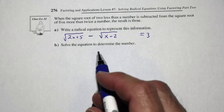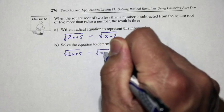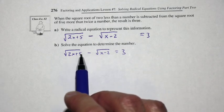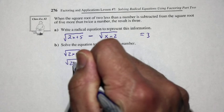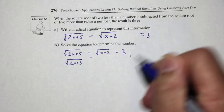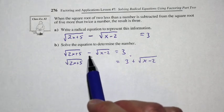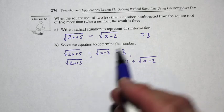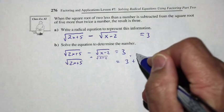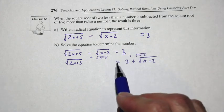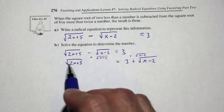Let's solve that equation. We have square root of 2x plus 5 minus the square root of x minus 2 equals 3. To solve radical equations, we isolate one radical and then square both sides. We'll keep the square root of 2x plus 5 and add the square root of x minus 2 to both sides. The left side becomes just the square root of 2x plus 5, and the right side becomes 3 plus the square root of x minus 2. Now we're going to square both sides.